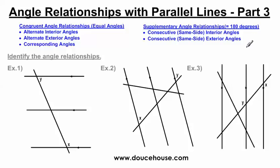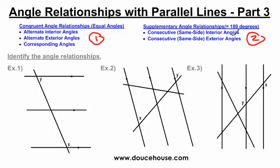In today's video I'm going to go over the trickier problems that you're going to come across whenever we're talking about angle relationships within parallel lines. My first video covered the congruent angle relationships, and my second video discussed the supplementary angle relationships — remember, supplementary means two angles that add up to 180 degrees. You can find those on YouTube as part one and part two, or at my website dousehouse.com under the first six weeks of videos.